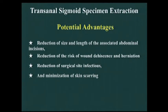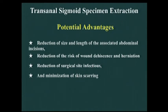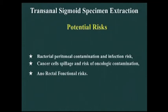Why do this? The potential advantages include reduction of the size and length of the associated abdominal incision, reducing the risk of wound dehiscence and herniation — since the extraction site for the specimen requires a larger incision than a trocar site — and also reducing the risk of infection at the trocar or incisional site, and minimizing skin scarring.